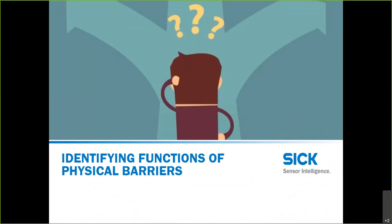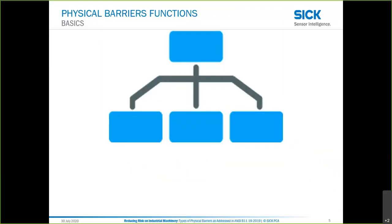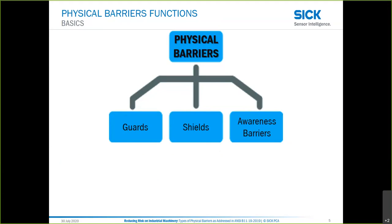Physical barriers as a general concept for reducing risk in the workplace seems pretty simple, but there is a lot of nuance that goes with it. We identify three main categories that fall under the general headline of physical barriers: first, guards — the traditional thing that keeps people away from the hazard; second, shields — another sub-part of a barrier; and lastly, awareness barriers.